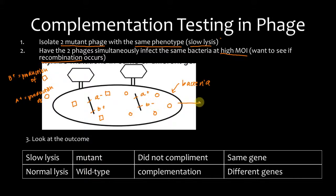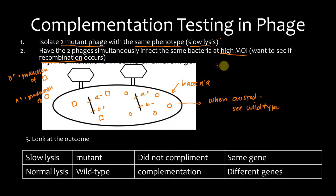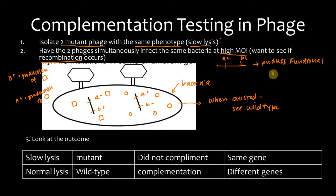And the second phage produces the circular protein because A is working, but it doesn't produce the square protein because B is not working. But look what happens when we cross these — if they're on separate genes, when crossed, you should see wild type. Because remember, wild type is A-plus B-plus, which means it produces functional circles and squares. Here we have functional circles and squares because they complement one another.